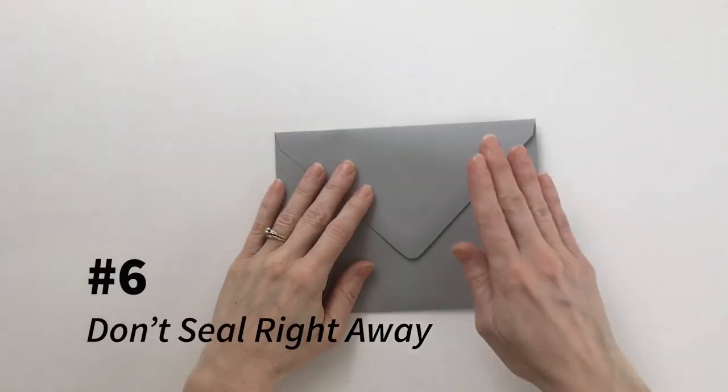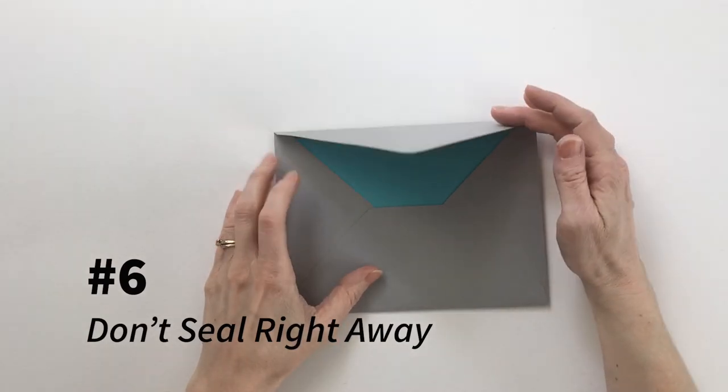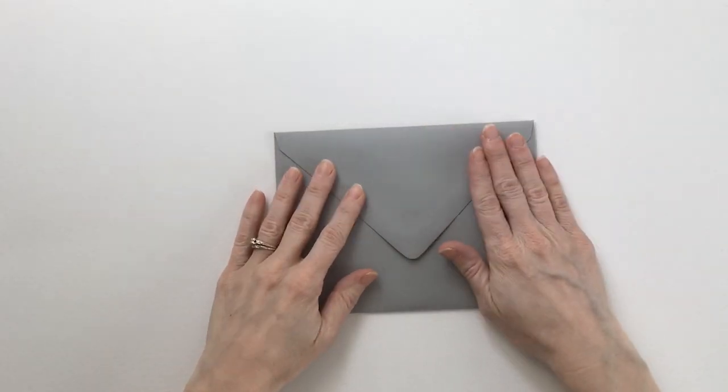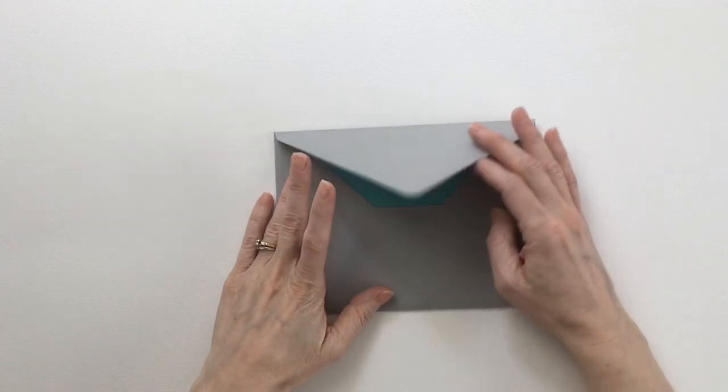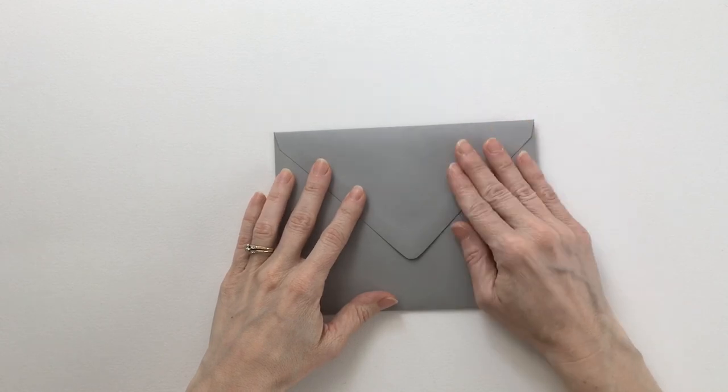Tip six, real quick, don't seal everything until all the suites are assembled and you've made sure that they have every piece they need. You definitely don't want to have to rip envelopes open to find the one with a missing reply card, for example.